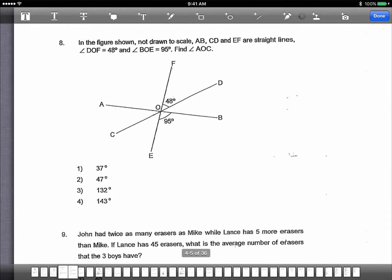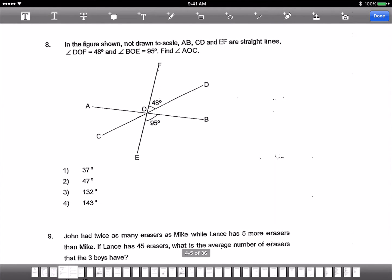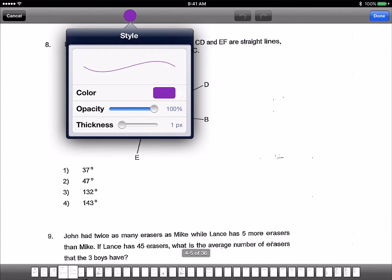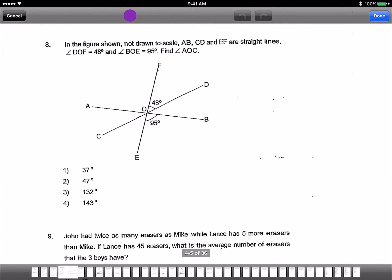Next, in the figure shown, not drawn to scale, ABCD is a rhombus. Find angle AOC. So AOC is over here. So how to find angle AOC? Now we have this angle is 48 degrees. And since AB is a straight line, we take 180 minus 95. You will get 85.